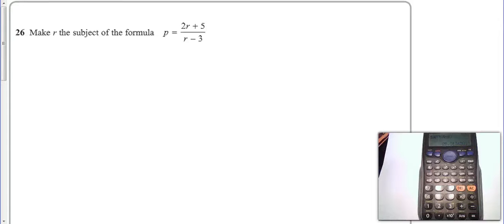Well, you'll see we're going to get r in two places and that's what we've got to deal with. So our first job is I'm going to multiply both sides of the equation by r minus 3. I'm going to destroy that fraction.